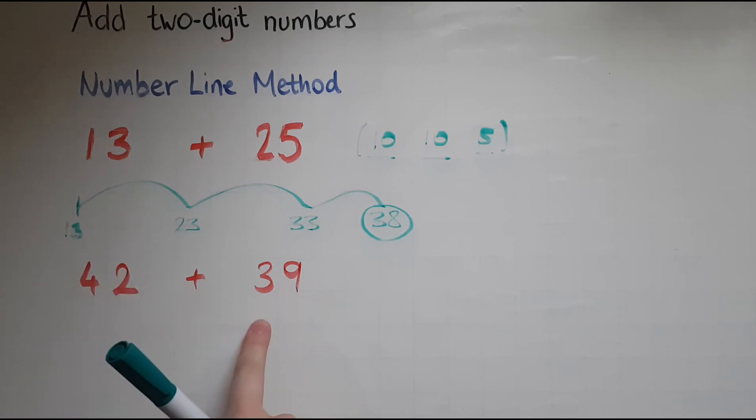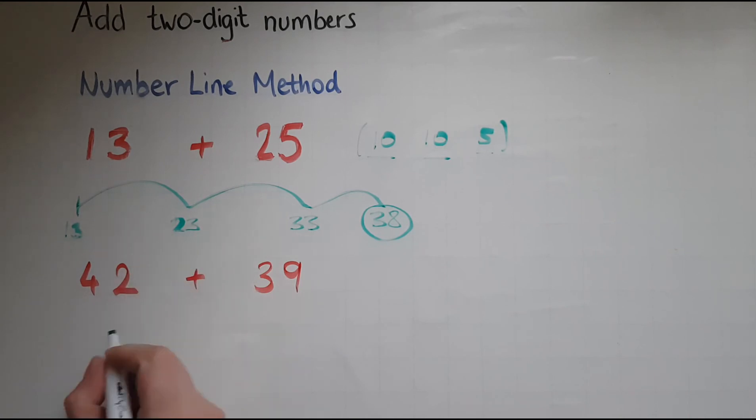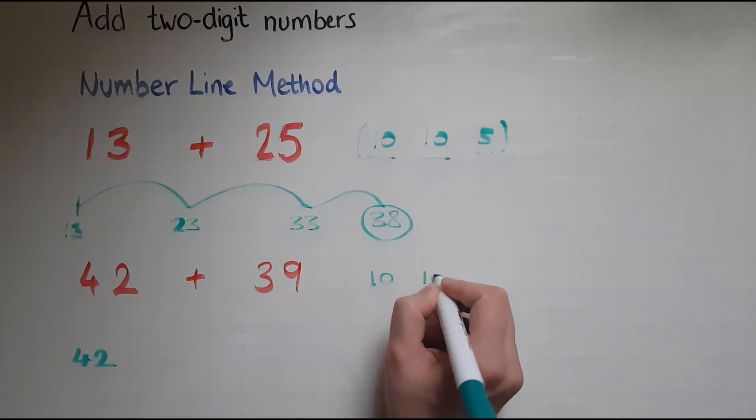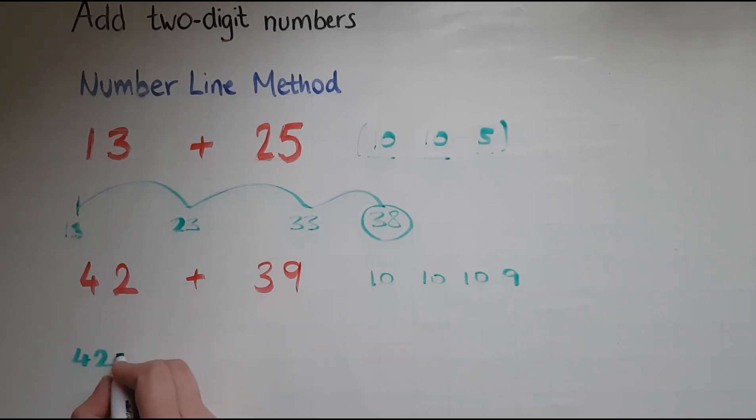Now we'll look at another example. So we've got 42. So we're starting with 42. I'll add to that 10 and 10 and 10 and 9. So I'll add 10 to make 52, and another 10 to make 62, and another 10 to make 72, and 9 to make 81. And that gives me the answer. So this is how you use the number line method to add two 2-digit numbers.